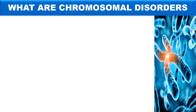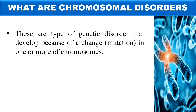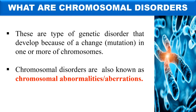So first of all, what do you mean by chromosomal disorders? Chromosomal disorders are diseases which are due to the change in chromosome structure or in number. Simply, these are the genetic disorders which are due to mutation in the chromosomes, and these chromosome disorders are also called chromosomal abnormalities or chromosomal aberrations.